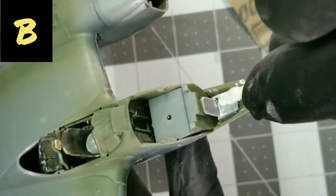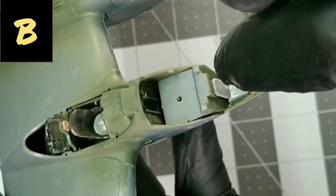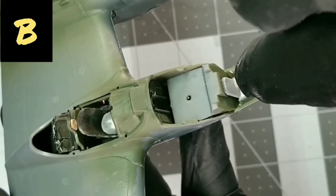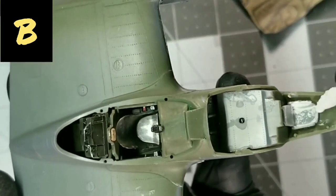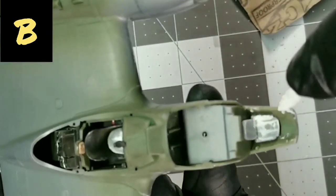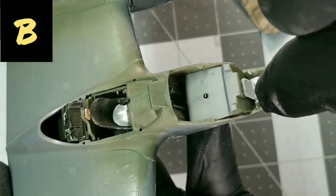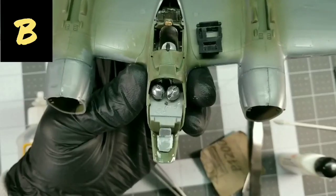And you can see with the putty, since it does dry hard, you can actually add textures with this putty. And you can kind of make it look like something was there, something is there. So, like a cushion or a cloth or something like that.